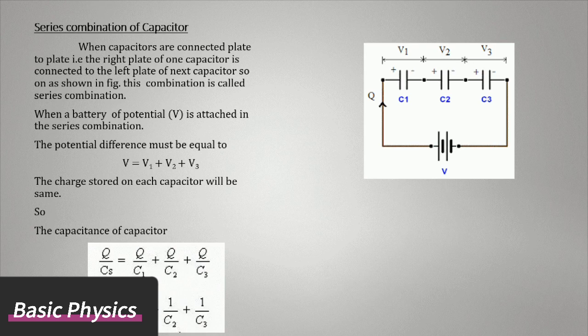The capacitance of capacitor: 1/C_eq = 1/C1 + 1/C2 + 1/C3. When capacitors are attached in series, their equivalent capacitance decreases.